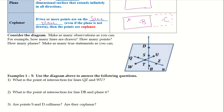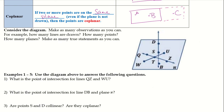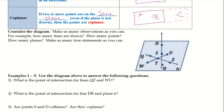Let's take a look at this diagram. We want to make as many observations as we can — for example, how many lines are drawn, how many points, how many planes. I'm going to give you a second to try and fill some of that out on your own. Alright, I counted three lines, eight points, and one plane at least drawn.